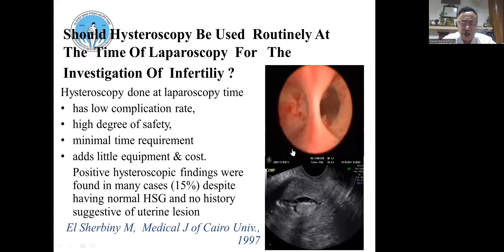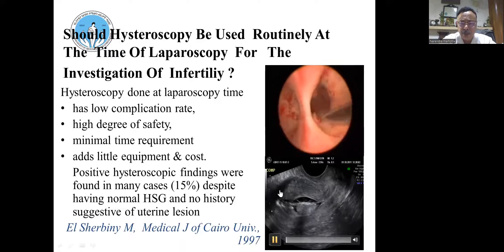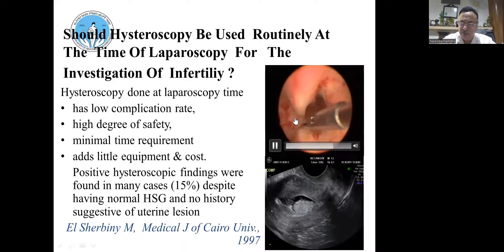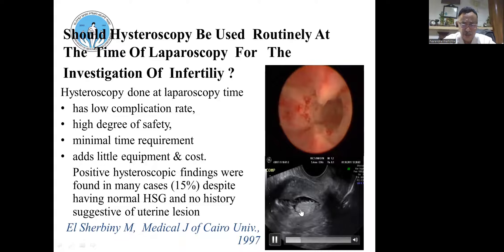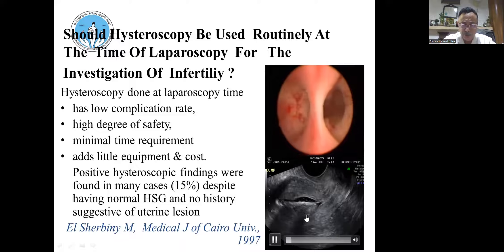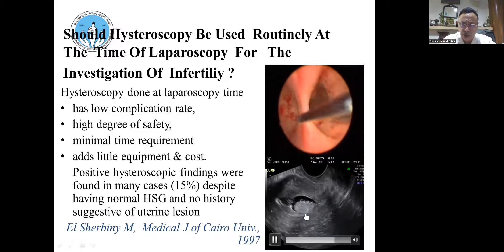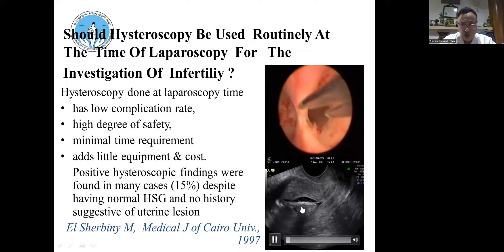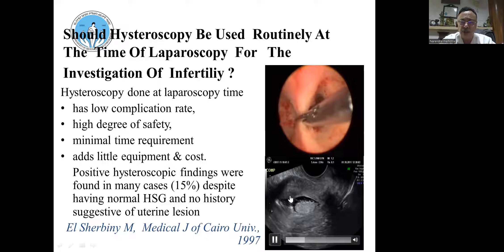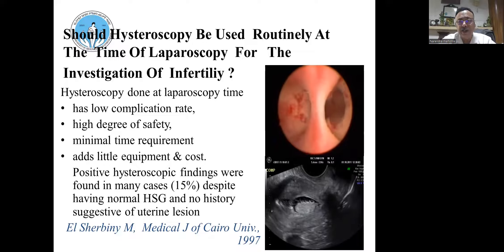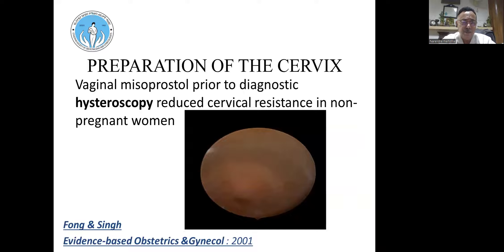Once a diagnosis is made — for example, a single adhesion — it can be cut in a low-resource OPD setting using only scissors to restore the cavity. For a big polyp with a very wide base, color Doppler is used to assess vascularity. Very vascular pedicles need to be handled in the operation theater since they may bleed and require cauterization. Deciding what can be done in OPD versus OT is critical.